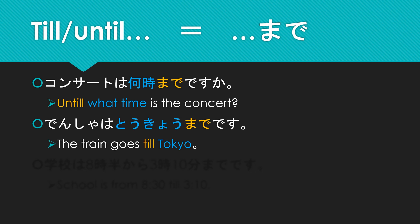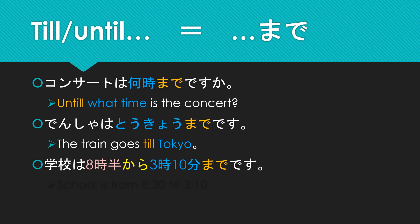Now how about combining 'from' and 'till' in one sentence? Can you figure out what this means: 学校は8時半から3時10分までです? That's right — it means school starts from 8:30 and goes till 3:10.